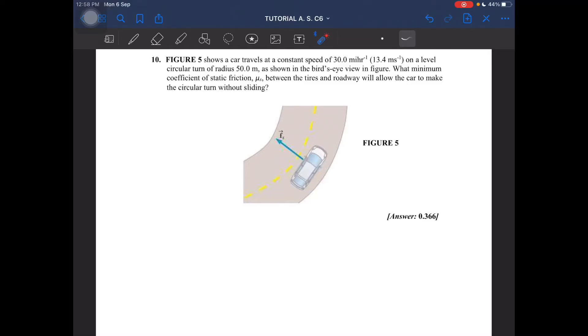Right, last question. This figure shows a car traveling at a constant speed of 13.4 meters per second on a level circular turn of radius 50 meters, as shown in the bird's eye view. What minimum coefficient of static friction between the tires and roadway will allow the car to make the circular turn without sliding?